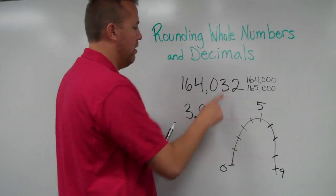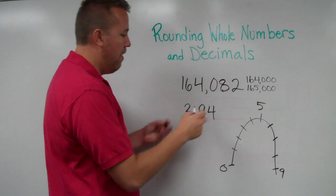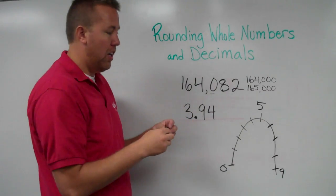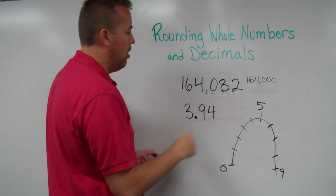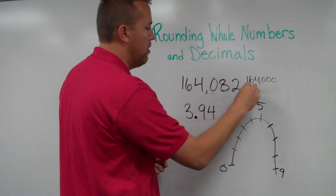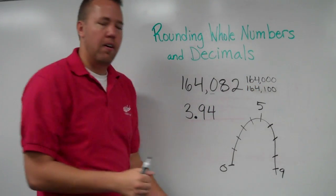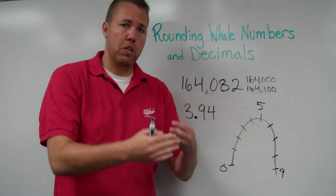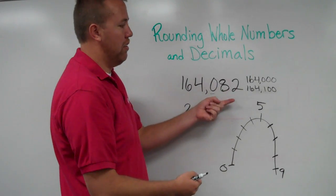Now, if we rounded it, I'm going to change this to an eight just to make it easier on us. If we wanted to round to the nearest hundred, our choices would be 164,000, because zero hundreds, or 164,100. We look at the hundreds, which that number is in between. Now, eighty-two is between zero hundreds and one hundred.